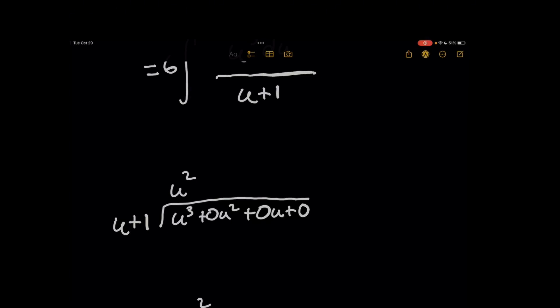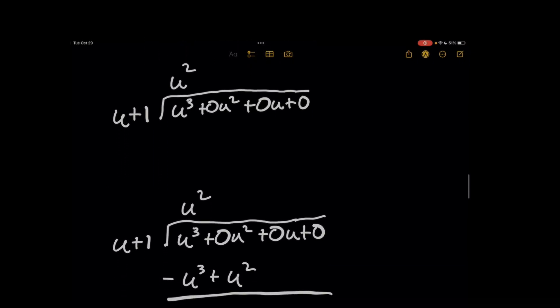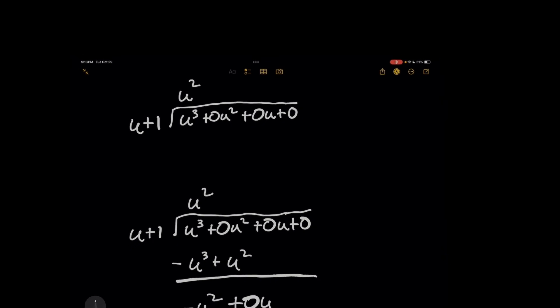So now you take u squared from the quotient, multiply it by every term on the left in the divisor, and you're going to write that expression below, and then subtract everything. So when you multiply through, you got u cubed plus u squared.